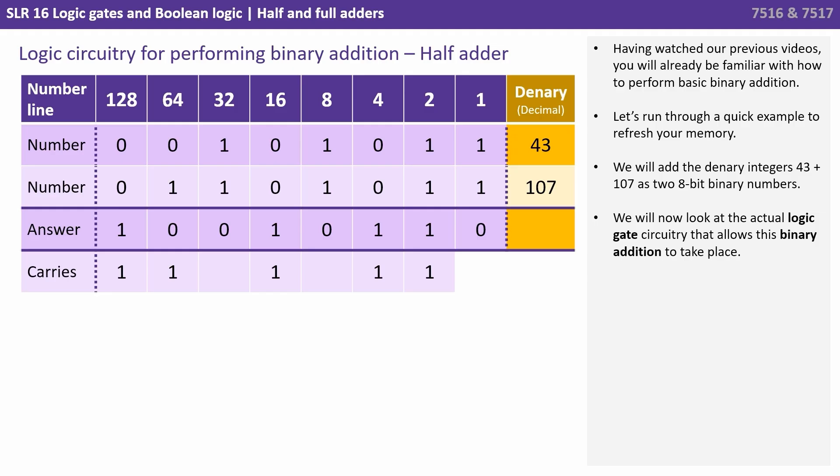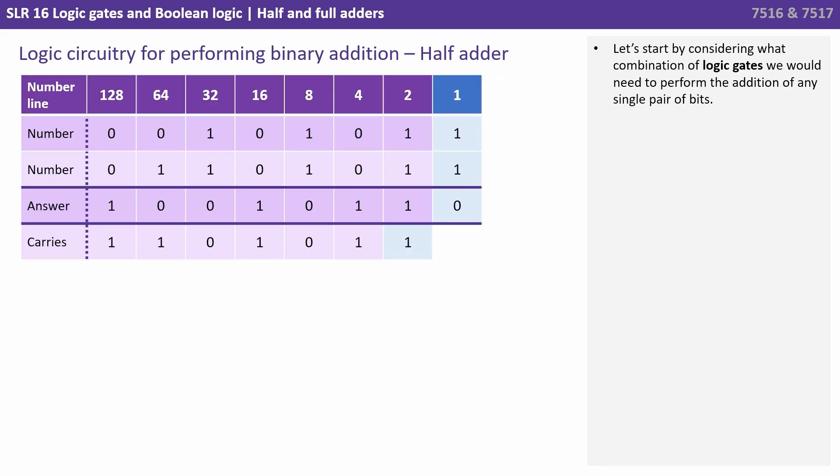We're now going to look at the actual logic gate circuitry that allows this binary addition to take place. Let's start by considering what combination of logic gates we would need to perform the addition of any single pair of bits.